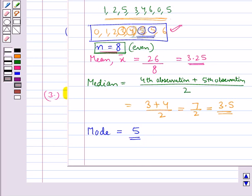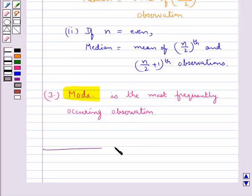So this is how we can find out mean, median, and mode for ungrouped data. This completes this session. Hope you have understood the measures of central tendency.